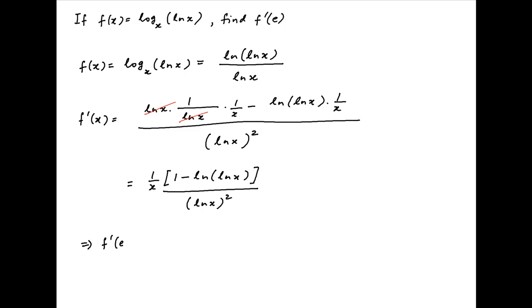Now put x is equal to e. Therefore, f'(e) is equal to 1 upon e times 1 minus ln(ln(e)) divided by ln(e) whole square.